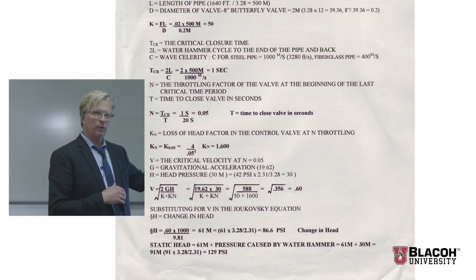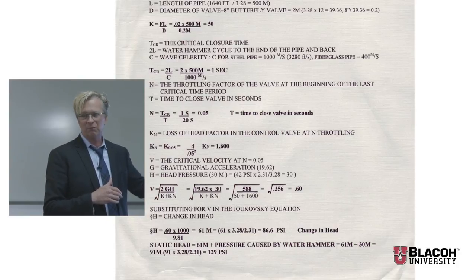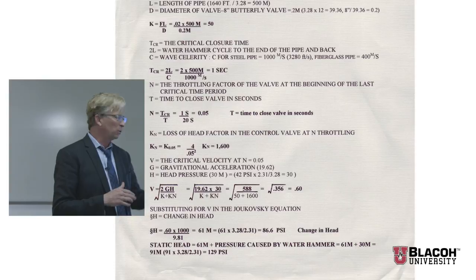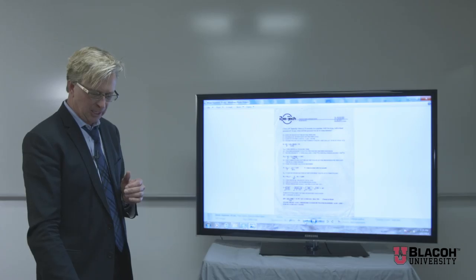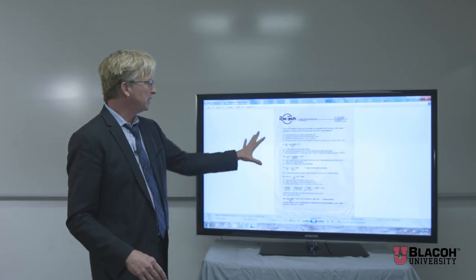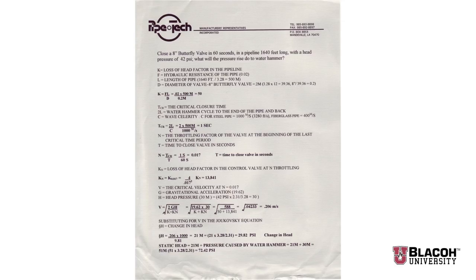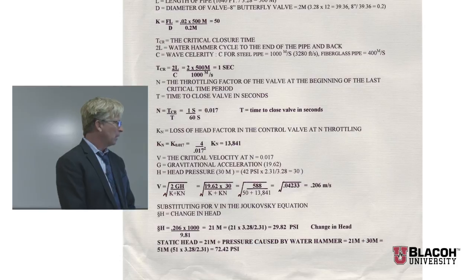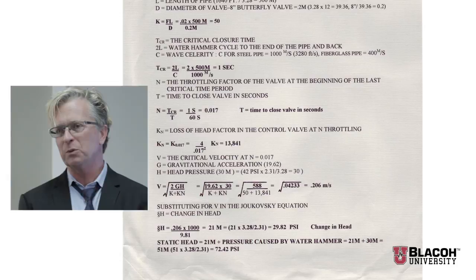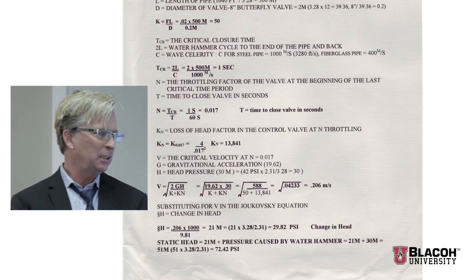With the 20-second closure time, our critical closure time is 0.05. We factor in the critical velocity at n which is 0.05, gravitational acceleration, the operating pressure of 42 PSI, and come up with 0.60. Substituting into Joukowsky's equation gives us a change in head of 86.6 PSI plus our 42 PSI initially. So the pressure went from 42 PSI to 129 PSI.